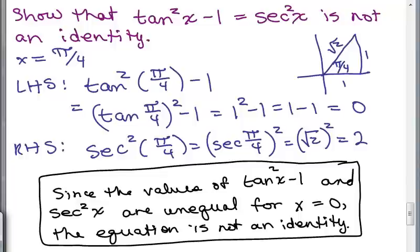So we state this as a sentence: since the values of tan²X minus 1 and sec²X are unequal for X equals π/4, the equation is not an identity. You have to clearly state what you showed — that plugging in X equals π/4 gives different values on each side.